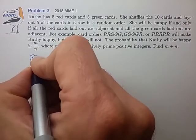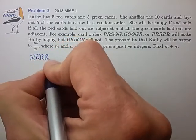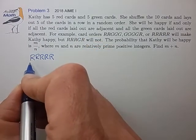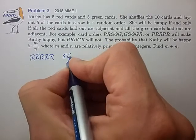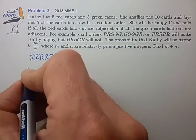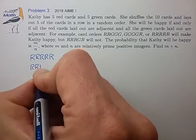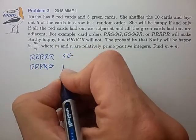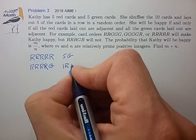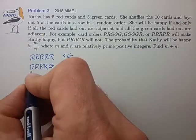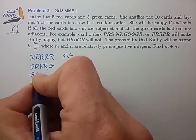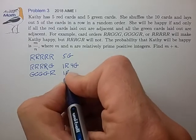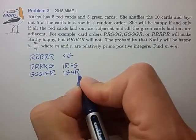In the first case, we have 5 red cards in the leftmost portion, which leaves 5 green cards to the right. We could have 4 red and 1 green, which leaves 1 red and 4 green to the right. We also have to consider the complement: 4 green and 1 red, which gives us 1 green and 4 red to the right.